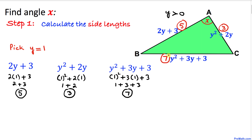You might be wondering: what if we pick a value other than 1? The answer is simple — no matter what value of y we pick, angle x is going to be the same in every case. I will give you another example with a different value of y to justify this. We have now figured out our side lengths as 5, 3, and 7.